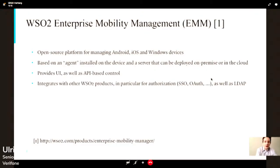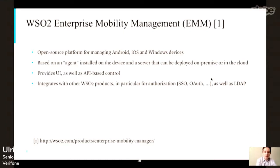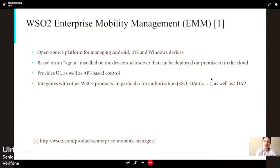Essentially, what EMM is — it is an open source platform for managing Android, iOS, and Windows devices. For us, we only use the Android part, at least for now. There are two components: an agent and a server. The agent is installed on the device as an Android APK file, and the server can be deployed either on premise or in the cloud — in our case, we put it in AWS. They provide a UI as well as RESTful APIs. We only use the APIs since we have our own UIs. EMM integrates with many other WSO2 products, some of which we use — in particular the identity server, SSO, OAuth, as well as directory services like LDAP.